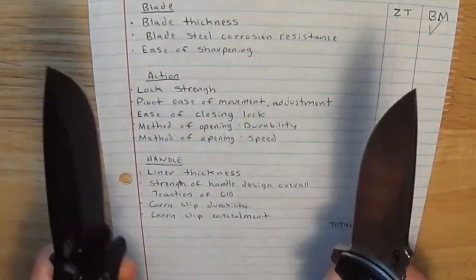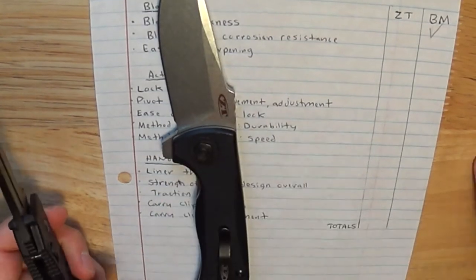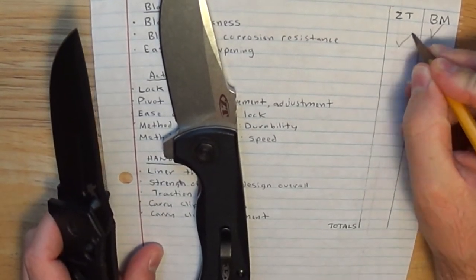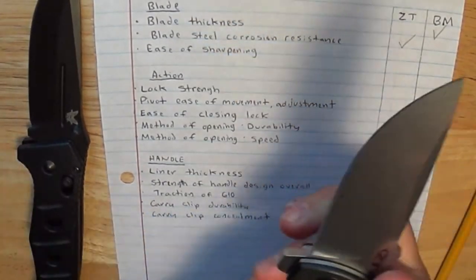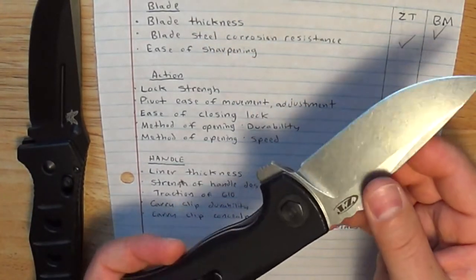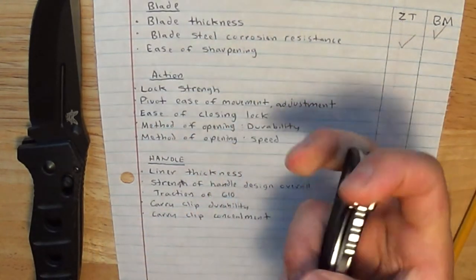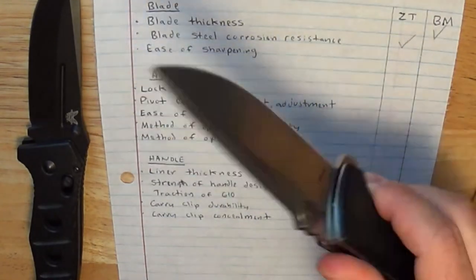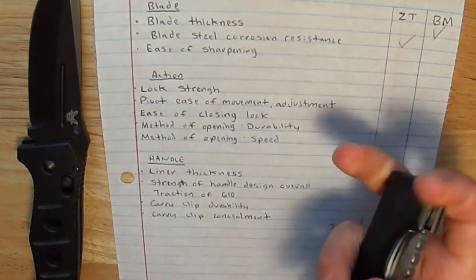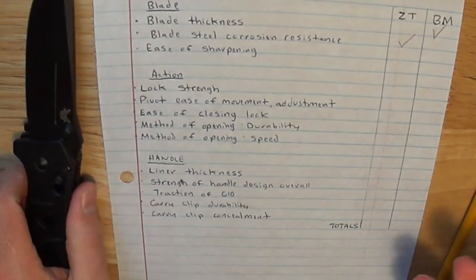Blade steel corrosion resistance, that's going to go to ZT with S35VN. It's a very corrosion resistant steel. They didn't feel the need to put a coating on it, either, so you can see the blade. I much prefer to be able to see steel when I buy steel. It's part of the charm of buying these knives that are S35VN, or M390, or even M4 if it's not coated, but I like seeing steel.